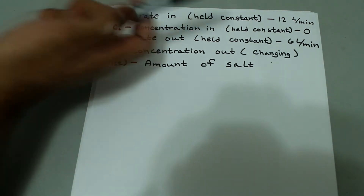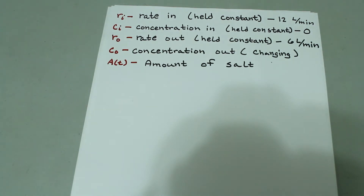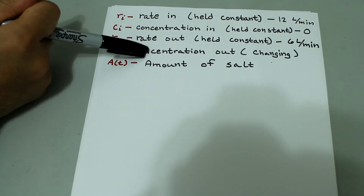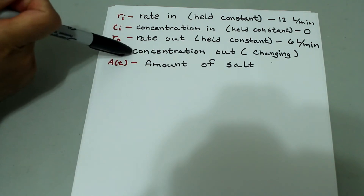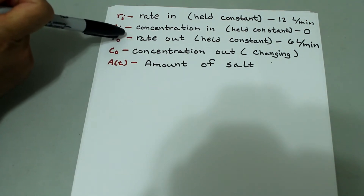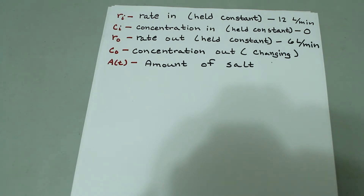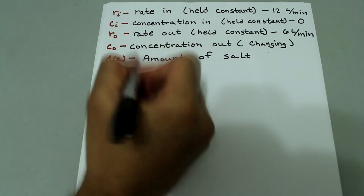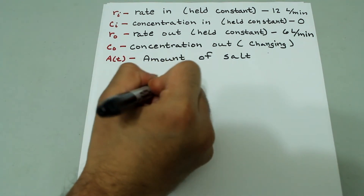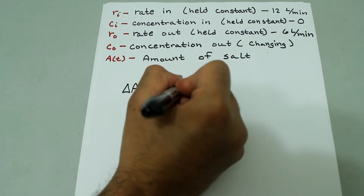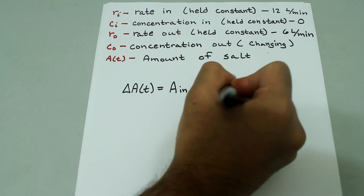The rate out we know is 6 liters per minute. The concentration out is not given to us, but we know the concentration out is always changing. Because the salt is leaving with the solution that's leaving the tank, but more salt is not coming in to replenish how much salt has left. So the concentration going out will always be changing. A of t is the amount of salt. The change in the amount of salt is given by delta a of t equals amount of salt in minus amount of salt gone out.